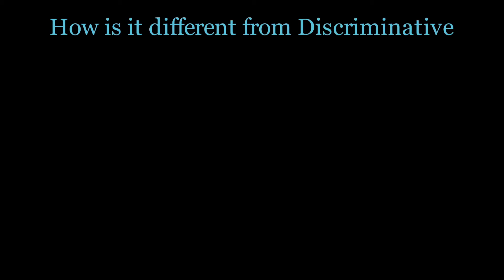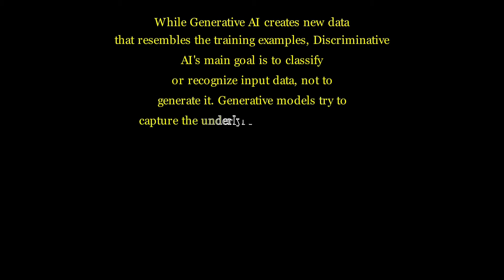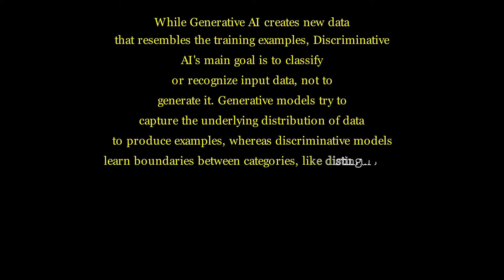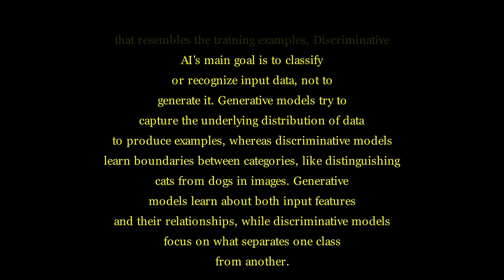How is it different from discriminative AI? While generative AI creates new data that resembles the training examples, discriminative AI's main goal is to classify or recognize input data, not to generate it. Generative models try to capture the underlying distribution of data to produce examples, whereas discriminative models learn boundaries between categories, like distinguishing cats from dogs in images. Generative models learn about both input features and their relationships, while discriminative models focus on what separates one class from another.